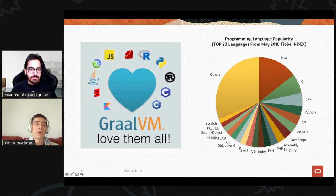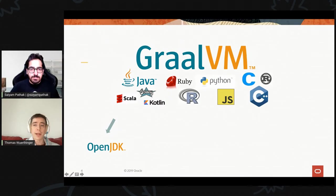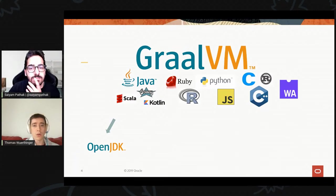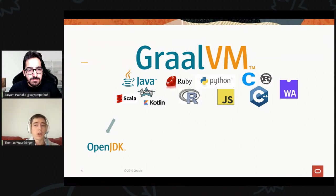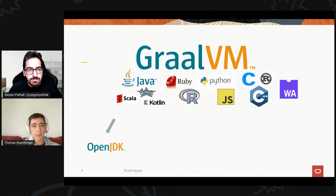We built a layer on top of our JIT compiler that enables it to be multilingual — we call this the Truffle layer. The Truffle framework is how we make GraalVM able to run many different languages, because we don't want to build a new JIT compiler and new runtime for every language. GraalVM is the first project that at scale is able to support such a wide variety of languages.